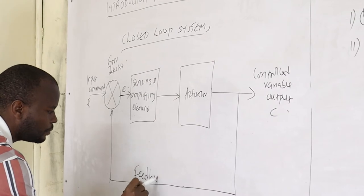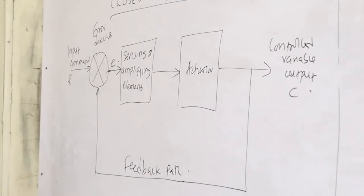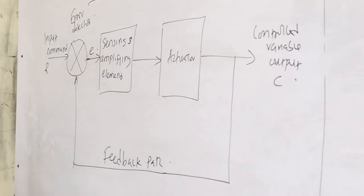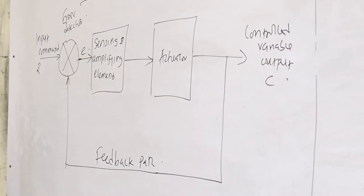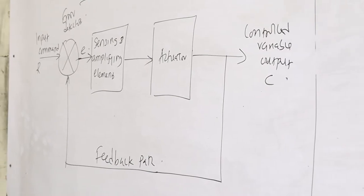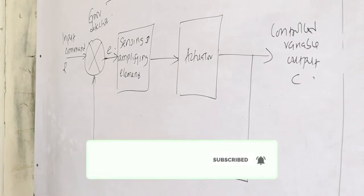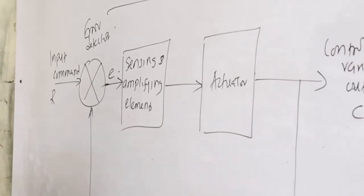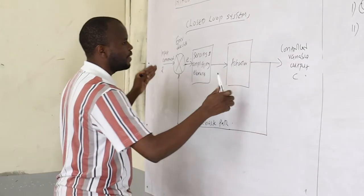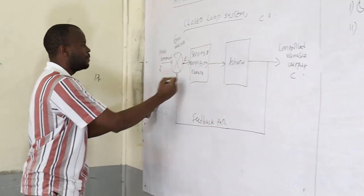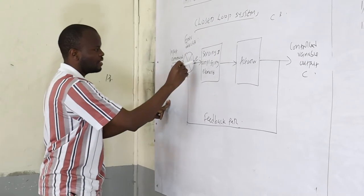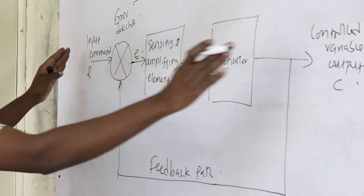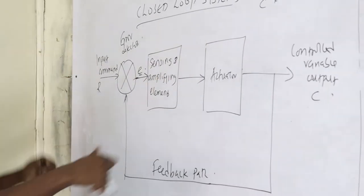The feedback path ensures that whatever is at the output is compared with the input in order to produce the error that will be used in regulating the system. The controlled signal is fed back and compared with the reference input, and an actuating signal proportional to the difference of the input and output is sent to correct the error. The error will be amplified to ensure that the difference between the input command and the control variable is as small as possible.